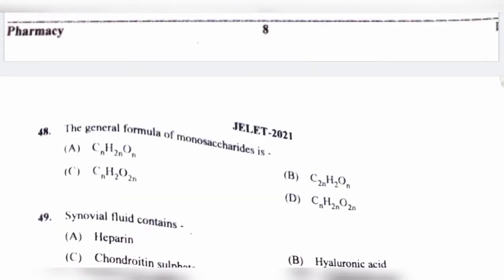Question number 48. The general formula of monosaccharides is: option A, CnH2nOn; option B, C2nH2On; option C, CnH2O2n; option D, CnH2nO2n.